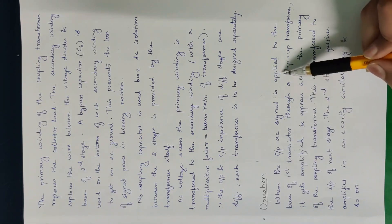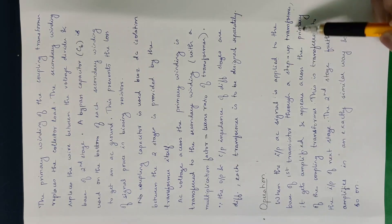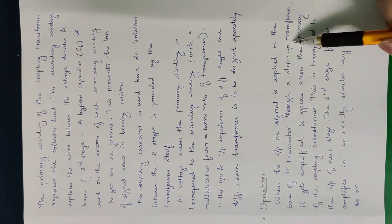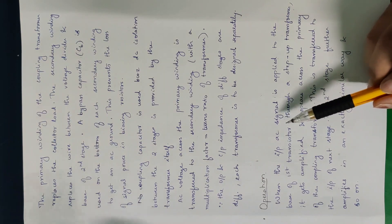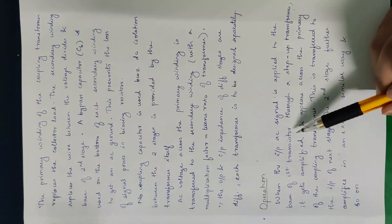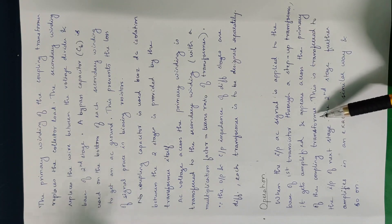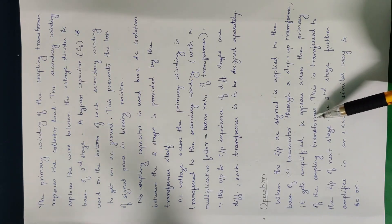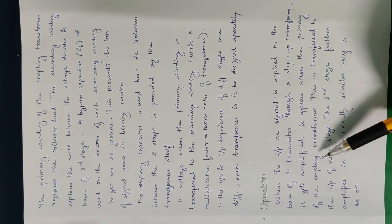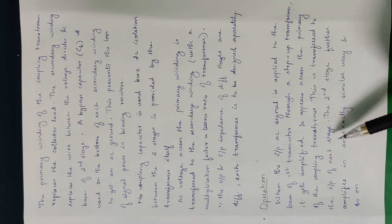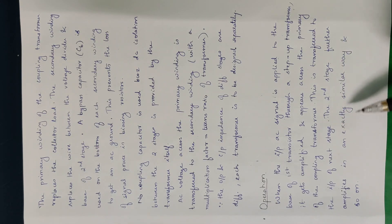When the input AC signal is applied to the base of the first transistor through a step-up transformer, it gets amplified and appears across the primary of the coupling transformer. This is then transferred to the input of the next stage. The second stage further amplifies in an exactly similar way, and so on.